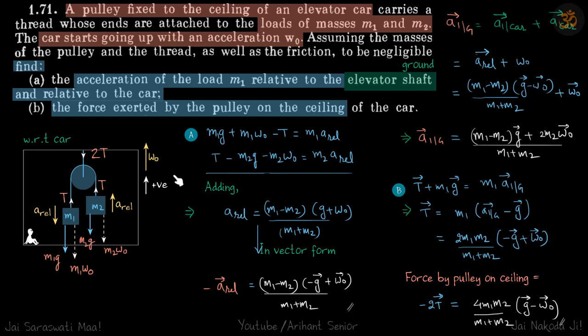Let's write the equation of motion on both of them. We'll do F equals MA on M1. So M1 G plus M1 W naught minus T equals M1 times A relative. Similarly for the second block we'll write. We'll eliminate tension because we want A relative. So we will get this.